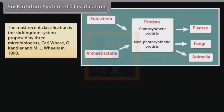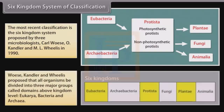Six Kingdoms System of Classification: The most recent classification is the Six Kingdoms System proposed by three microbiologists — Carl Woese, O. Candler, and Emil Willis in 1990. They proposed that all organisms be divided into three major groups called domains above kingdom level: Eukarya, Bacteria, and Archaea.